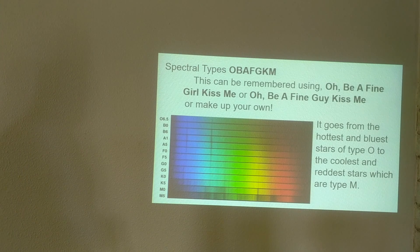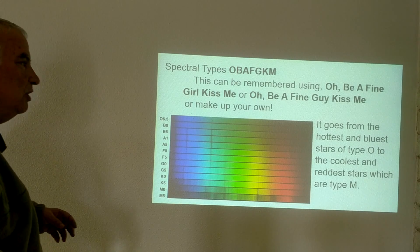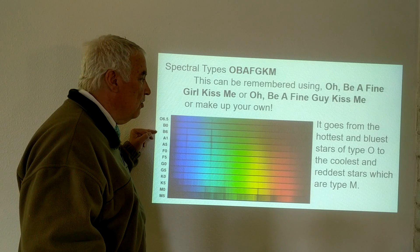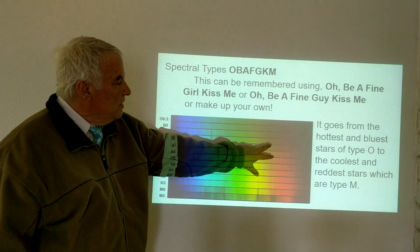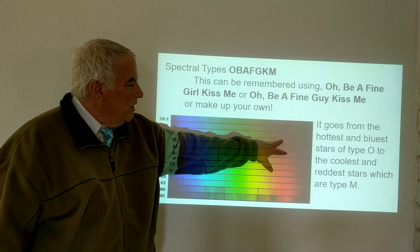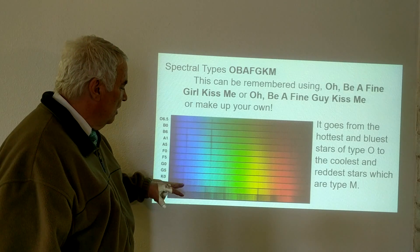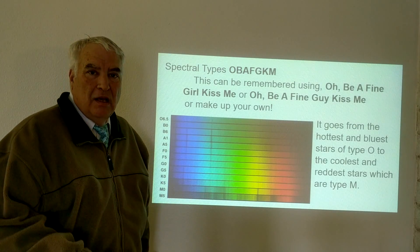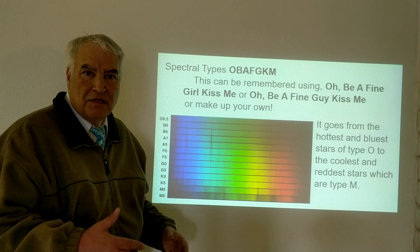This can be remembered with mnemonics like 'Oh Be A Fine Girl Kiss Me' or make up your own — 'Oh Be A Fine Gorilla, Who Knows.' It goes from the hottest and bluest stars of type O to the coolest and reddest stars of type M. In terms of temperature, blue is hot, yellow is medium, and red is cool.